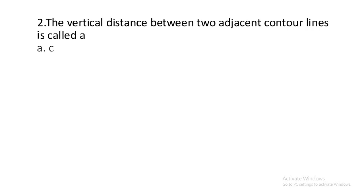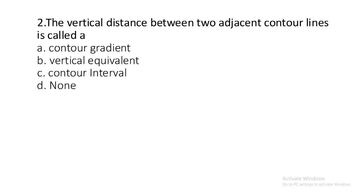Before moving to question number two, at any time if you think you need time to think for the answer, you can pause the video and come back with your answer. Question number two: The vertical distance between two adjacent contour lines is called: contour gradient, vertical equivalent, contour interval, or none of the above? The correct answer is contour interval.